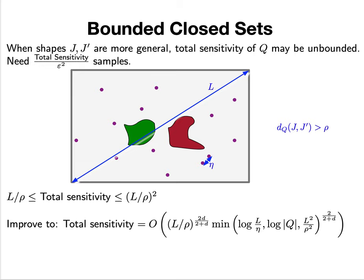With fairly straightforward packing and counting arguments, you can show that the total sensitivity might need to be as large as L/ρ, but does not need to be larger than (L/ρ)².